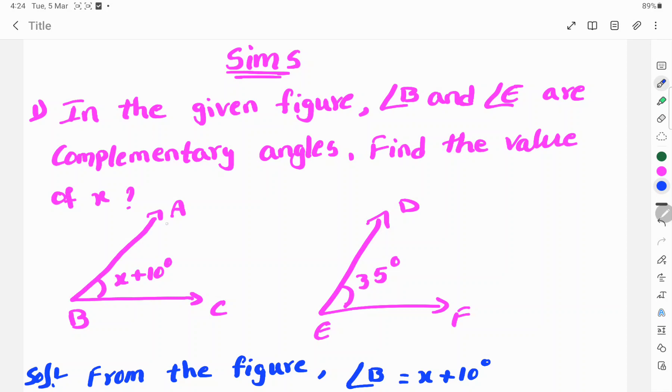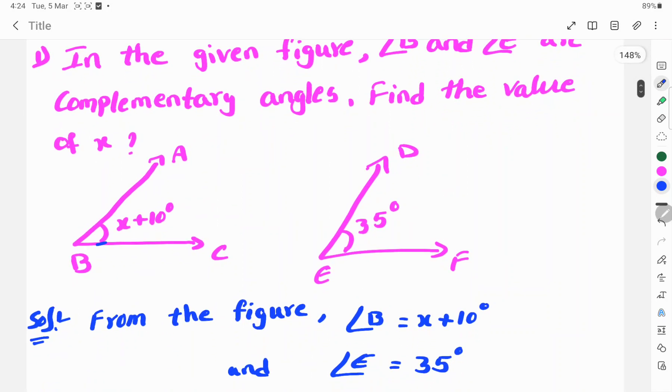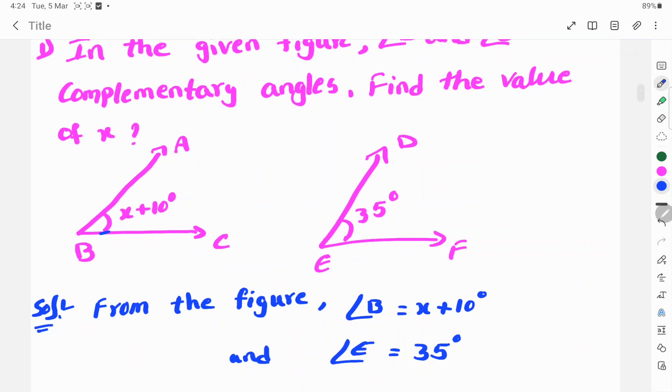Here we observe these figures: angle ABC and angle DEF. Angle ABC is x plus 10 degrees. Angle DEF is 35 degrees.